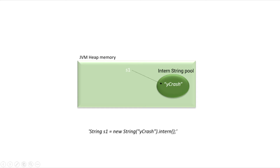It checks whether this is present in the intern pool. In this case it is not present, because this is the very first time it is coming. So it adds this 'ycrash' into the pool, and the reference to that is what gets assigned to s1. In case the 'ycrash' string is already present in the pool, then it will not create a new 'ycrash' string — rather, it is going to send back the same reference back.